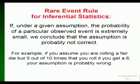The rare event rule for inferential statistics says if, under a given assumption, the probability of a particular observed event is extremely small, we conclude that the assumption is probably not correct. I distinctly remember reading that sentence the first time I taught statistics, and I was mad anyway. But I just looked at it and thought, what the heck? What is that saying?